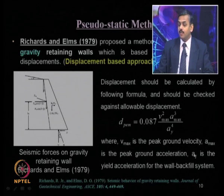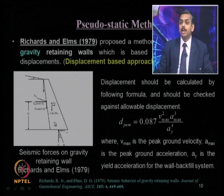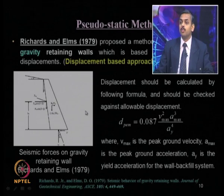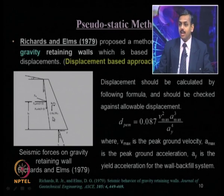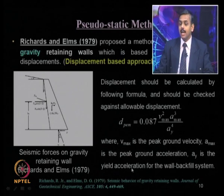Yield acceleration is that acceleration when the factor of safety with respect to sliding equals 1. So a_y refers to that seismic acceleration beyond which, if the acceleration increases, the wall starts moving because the factor of safety with respect to sliding becomes less than 1. It gives us the limiting threshold value of acceleration at which factor of safety equals 1.